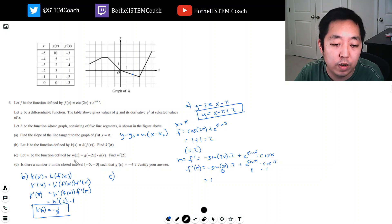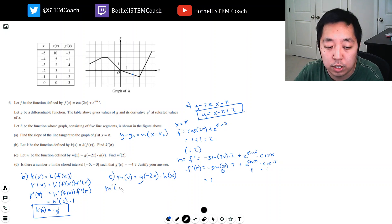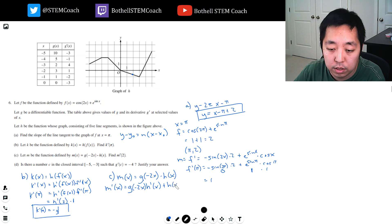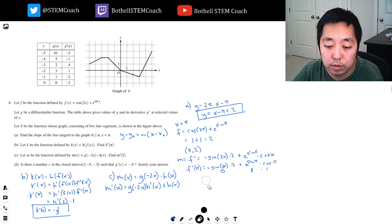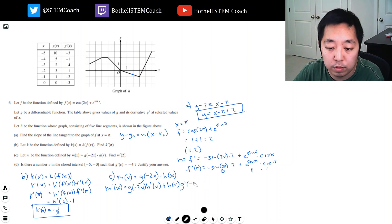Part C: Let m be the function defined by m(x) equals g of negative 2x times h(x). Find m prime of 2. So here they're really testing whether or not you understand all the rules of differentiation. I'm multiplying two functions, so I definitely do product rule. I'm going to do first times the derivative of the second plus the second times the derivative of the first. The derivative of the first is g prime of negative 2x, but because the inside isn't x, I'm going to multiply by negative 2.